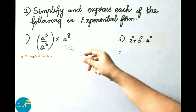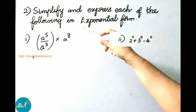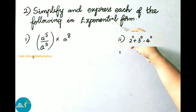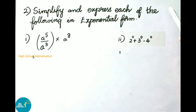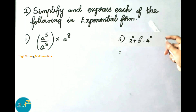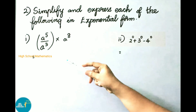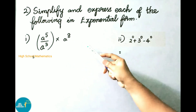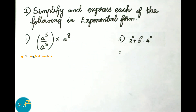See now second question: simplify and express each of the following in exponential form. The first sum: a power 5 by a power 3 into a power 8.